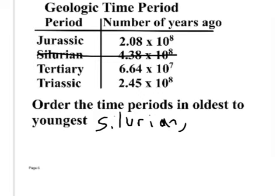Which one's the next oldest? Jurassic at 2.08, or Triassic at 2.45? Triassic, because that is bigger. So Triassic is my next oldest.